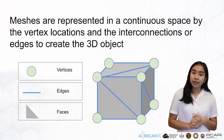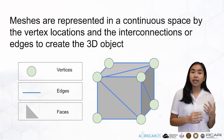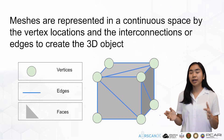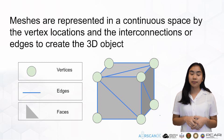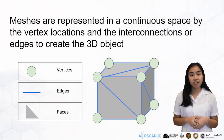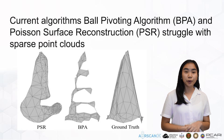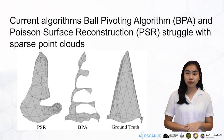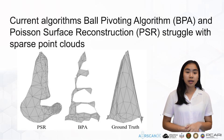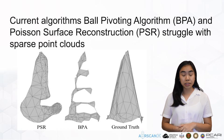The irregularity of meshes can make them challenging to form and process. Unlike images or occupancy grids that have regular grid-like structures, meshes have vertices embedded in continuous space and have varying face sizes. Although the current methods — Ball Pivoting Algorithm or BPA and Poisson Surface Reconstruction or PSR — demonstrate ability to create meshes from point clouds, they struggle in reconstructing sparse inputs.